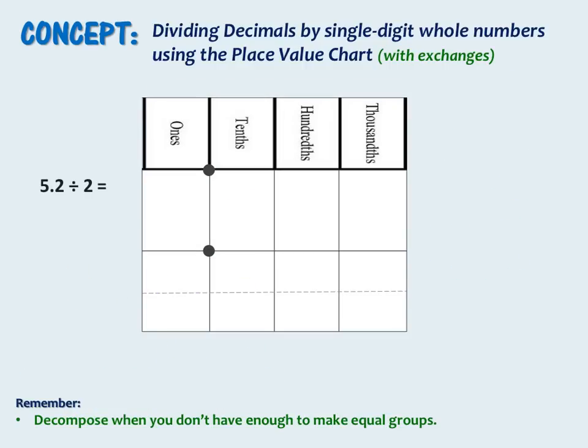In this example I will show you how to unbundle a number when 1 does not divide evenly in a place value. I will also show you how the place value chart relates to the standard algorithm. Let's begin by building our dividend in the top portion of the place value chart — we have 5 ones and 2 tenths.